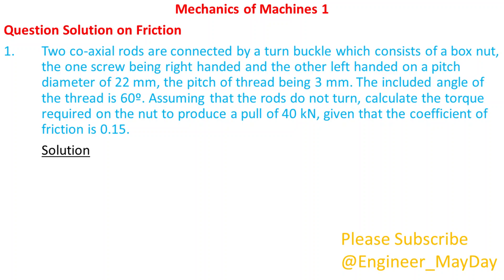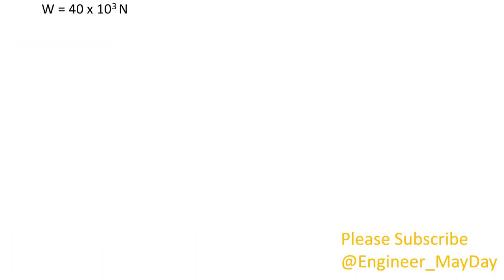Solution. Given: D equals 22mm, P equals 3mm, beta equals 30 degrees, mu equals 0.15, W equals 40 times 10 to power 3 newtons.